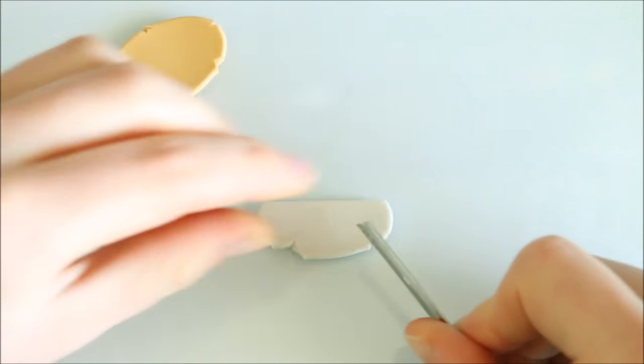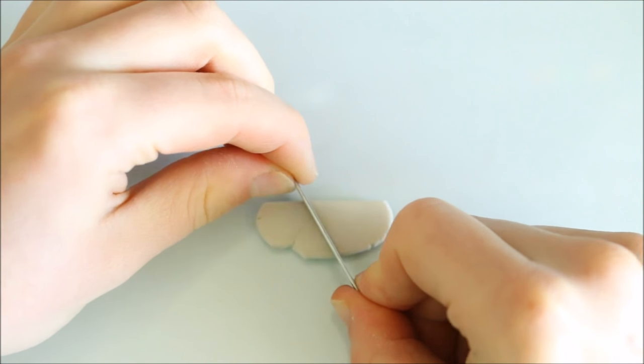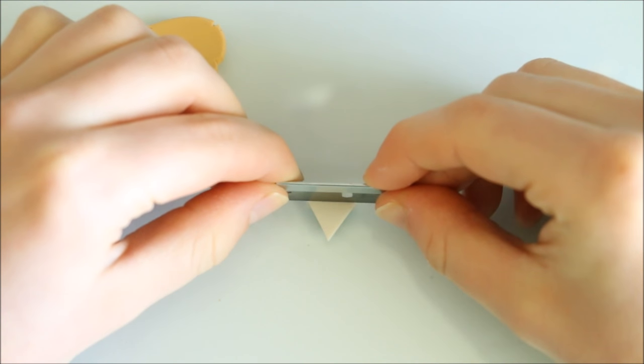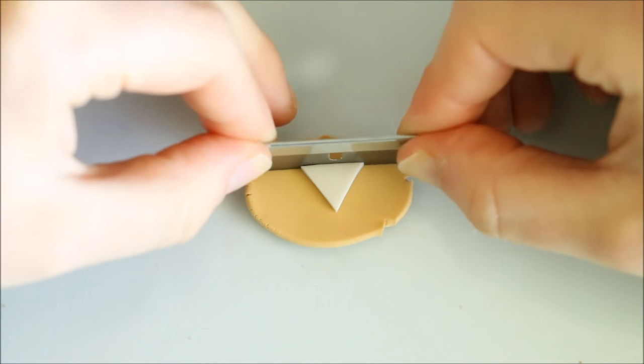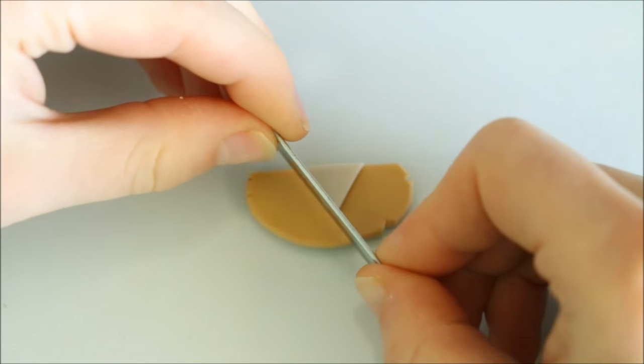I started off by firstly cutting a triangle out of the pearl clay using my blade. I then took the gold clay and used that triangle as a template to cut out one more the same size from the gold clay.